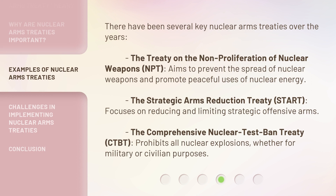There have been several key nuclear arms treaties over the years. The Treaty on the Non-Proliferation of Nuclear Weapons, NPT, aims to prevent the spread of nuclear weapons and promote peaceful uses of nuclear energy. The Strategic Arms Reduction Treaty, START, focuses on reducing and limiting strategic offensive arms. The Comprehensive Nuclear Test Ban Treaty, CTBT, prohibits all nuclear explosions, whether for military or civilian purposes.